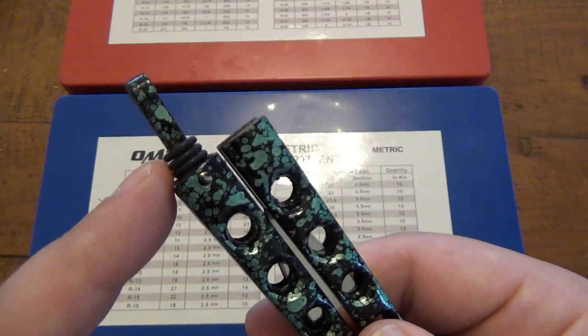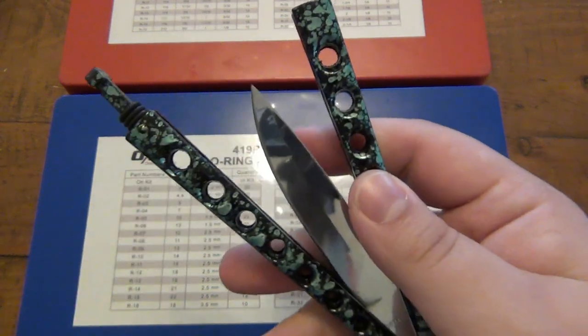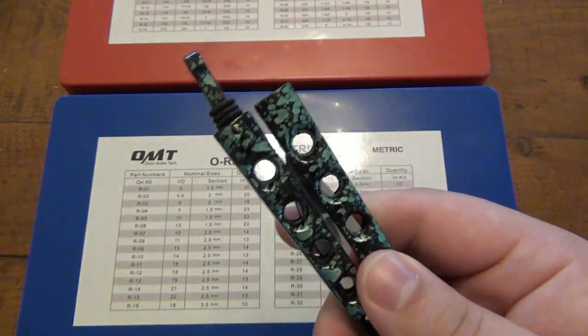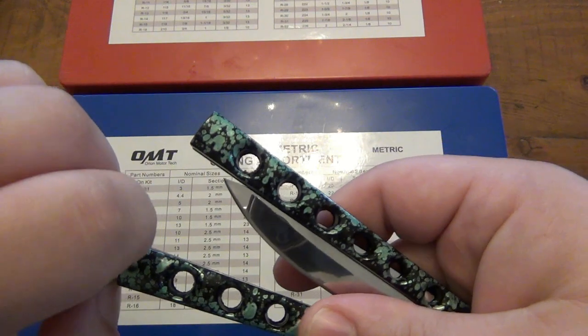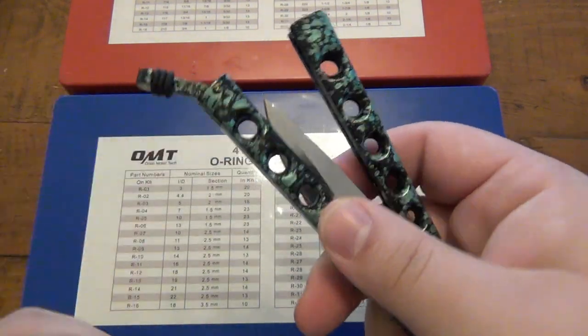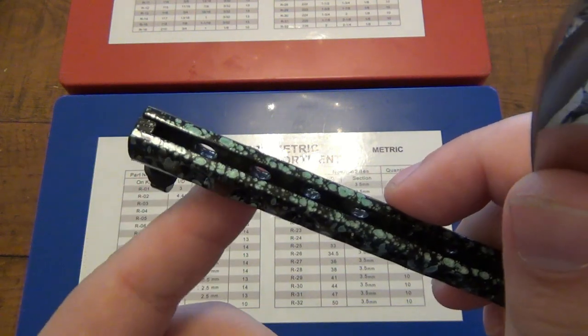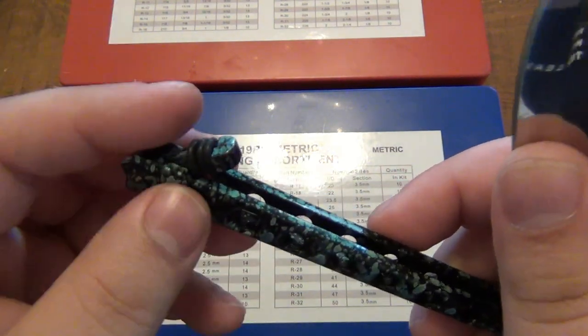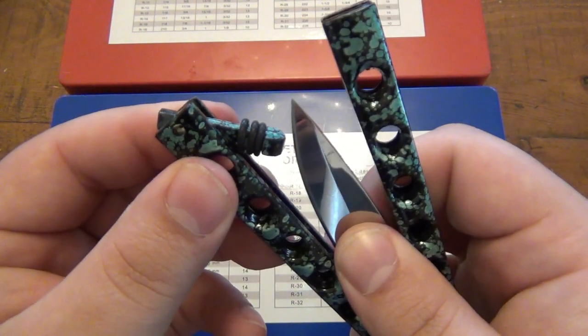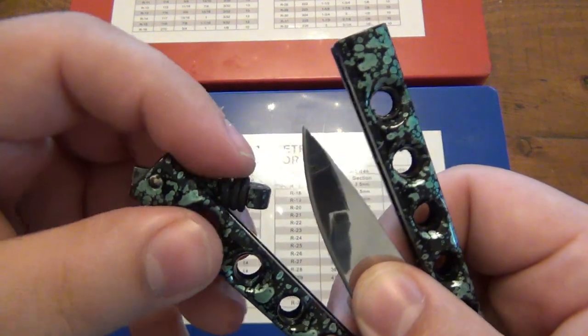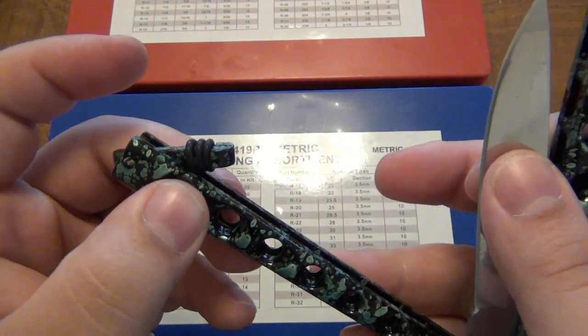So right now I have three o-rings that are on this latch. This is an old 90s style balisong. And the problem with the older ones and some of the cheaper ones is that there's no latch gate. If you're not familiar, a latch gate is some kind of obstruction, usually it's a piece that's in the frame that does not allow the latch to come so far down to where it can come in contact with the blade edge. So in this case, there's no latch gate. So when you're flipping this knife, it's very possible for that blade edge to hit the latch.